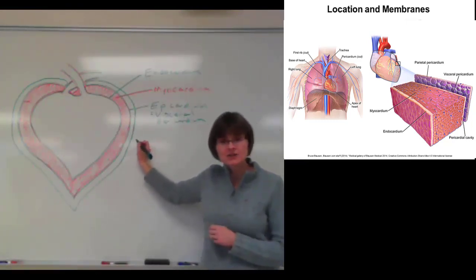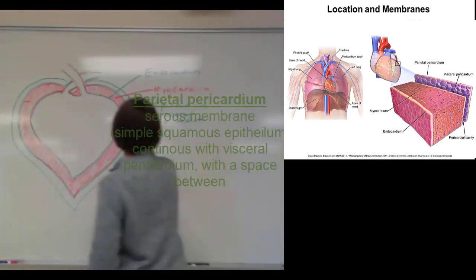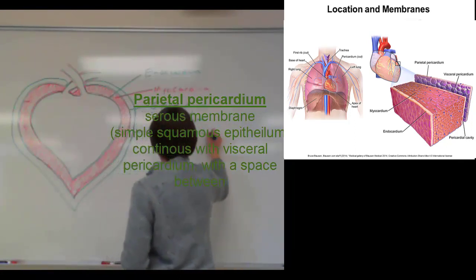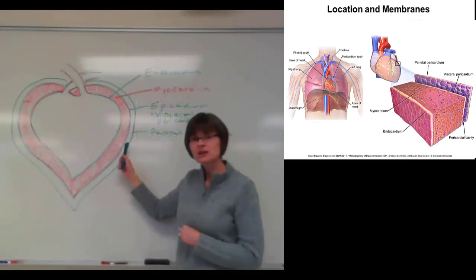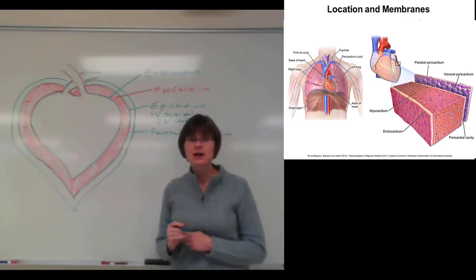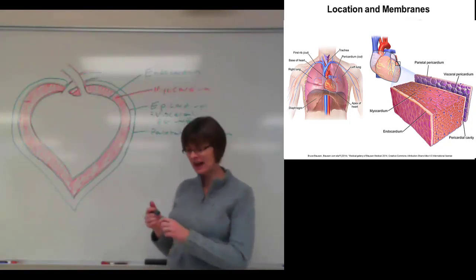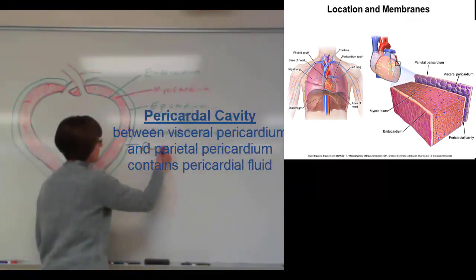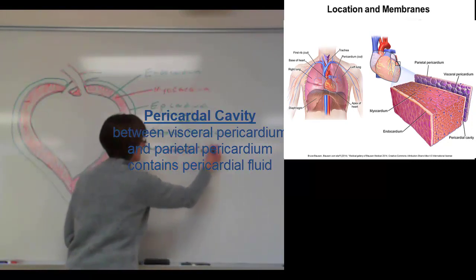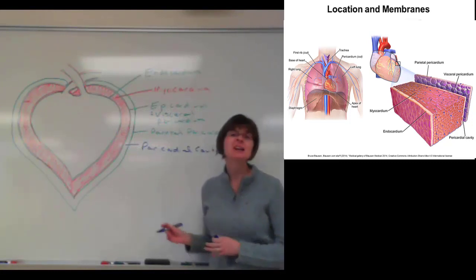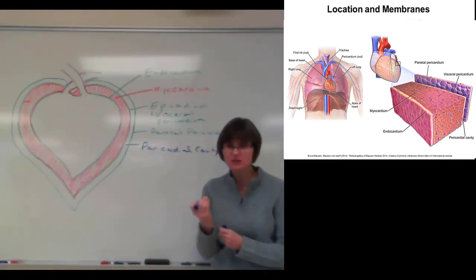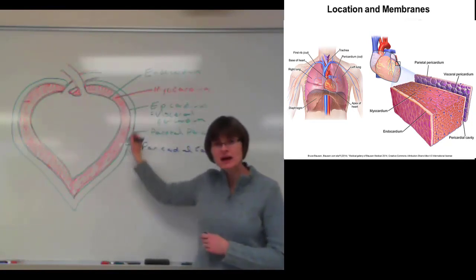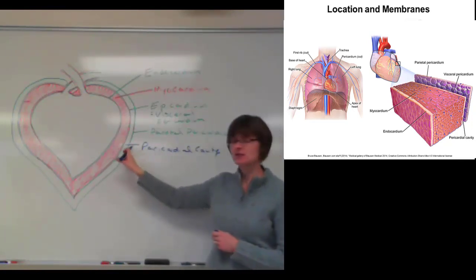This second layer of the serous membrane is called the parietal pericardium. In between the visceral pericardium and the parietal pericardium there is a little space called the pericardial cavity. The pericardial cavity is filled with pericardial fluid — only a small, narrow cavity with about 5 to 30 milliliters of fluid — filling the space between the two layers of the serous part of the pericardium.